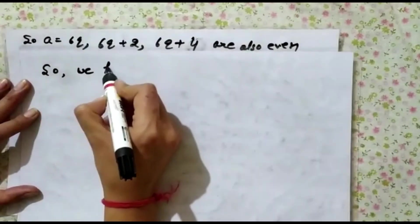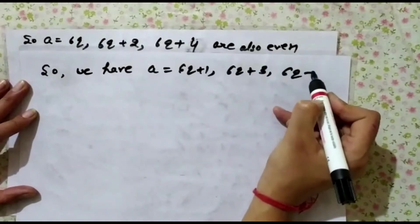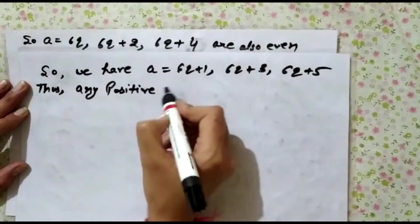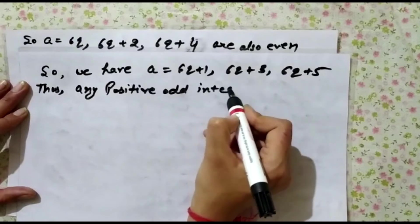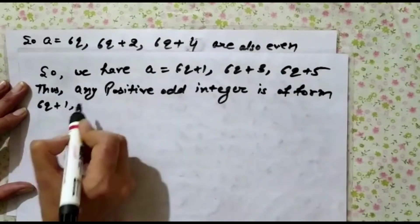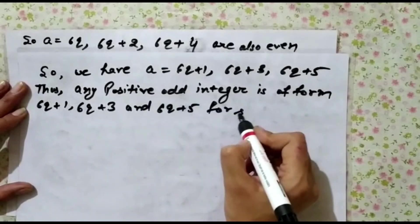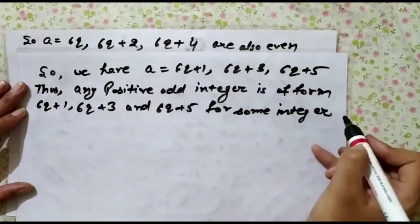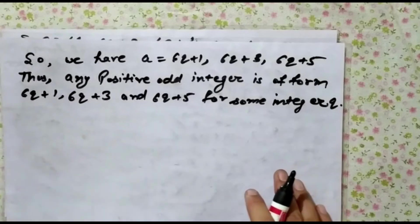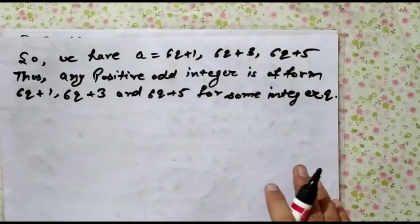So we have a equals 6q plus 1, 6q plus 3, and 6q plus 5. Thus, any positive odd integer is of the form 6q plus 1, 6q plus 3, or 6q plus 5, for some integer q. Any positive odd integer can be written in these forms because the remainder is 1 in all three cases, while in the other cases the remainder is a multiple of 2, so those numbers are even.